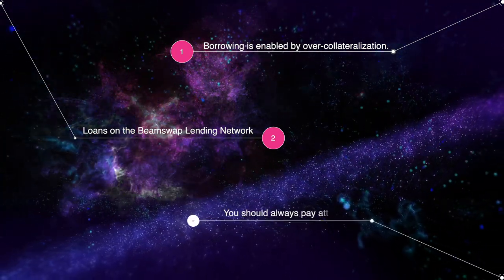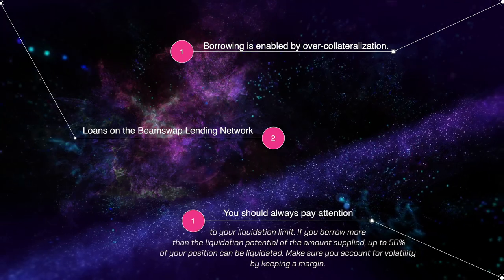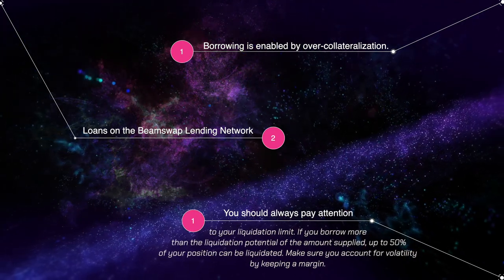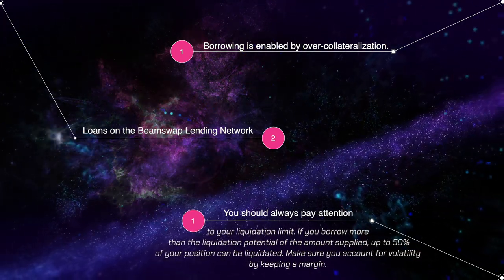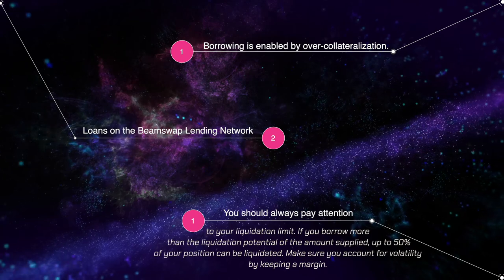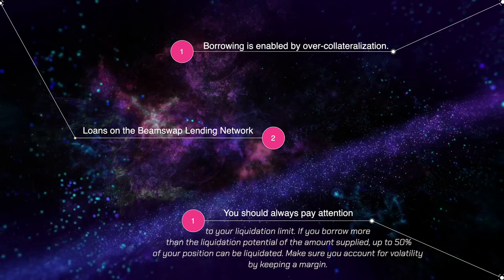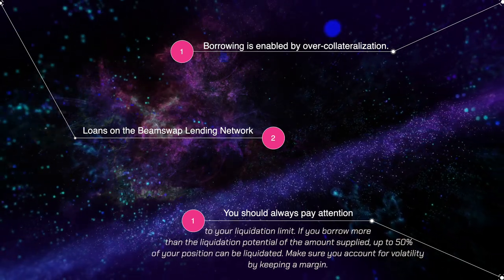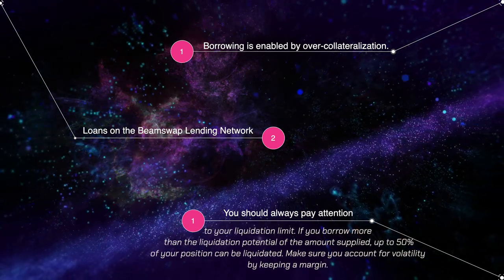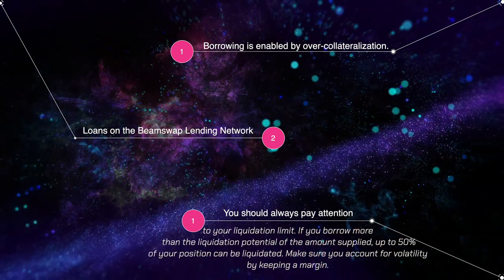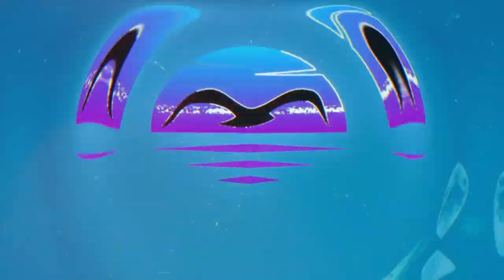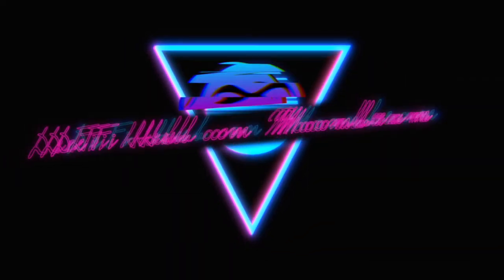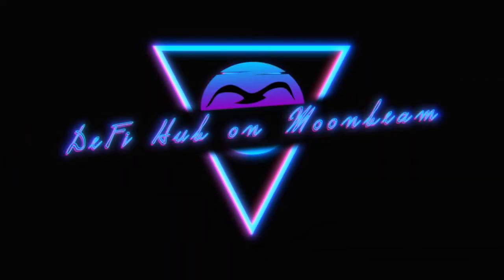You should always pay attention to your liquidation limit. If you borrow more than the liquidation potential of the amount supplied, up to 50% of your position can be liquidated. Make sure you account for volatility by keeping a margin. BeamSwap — DeFi hub on Moonbeam.